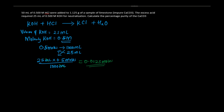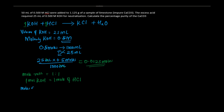Now let's check the mol ratio. From the equation, the coefficient of potassium hydroxide is 1 and that of hydrochloric acid is 1, so the mol ratio is 1:1. This means 1 mol of potassium hydroxide reacts with 1 mol of hydrochloric acid. Therefore, 0.0125 moles of potassium hydroxide reacted with 0.0125 moles of HCl. So moles of HCl in excess equals 0.0125 moles.